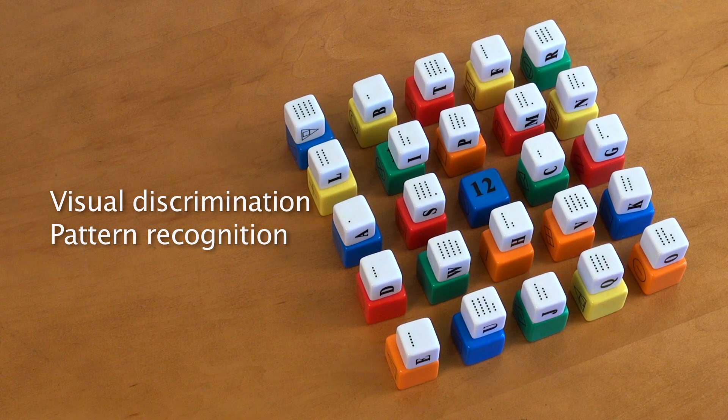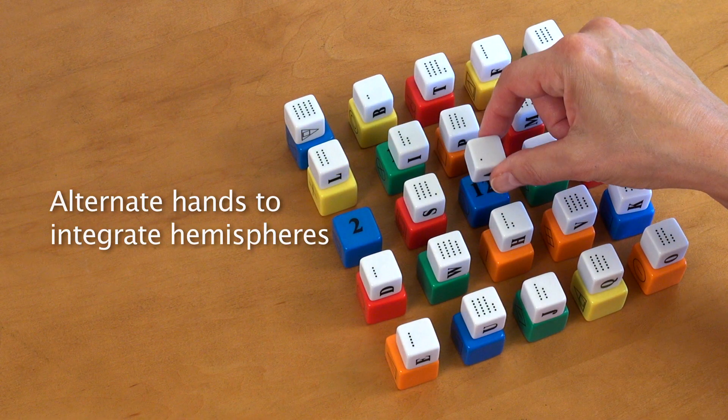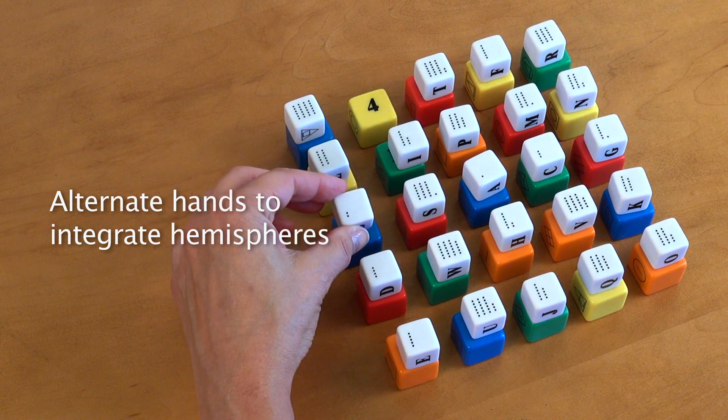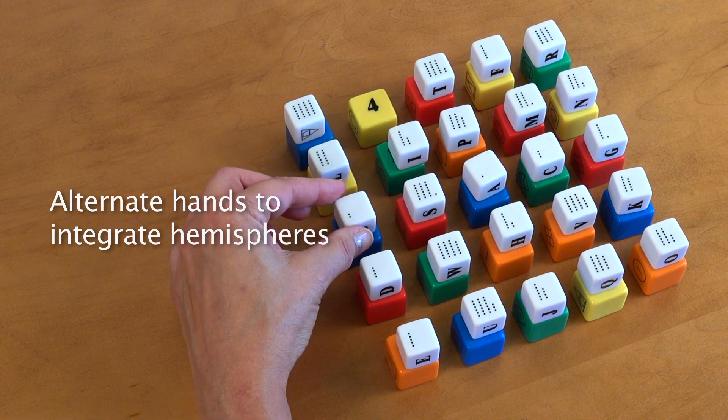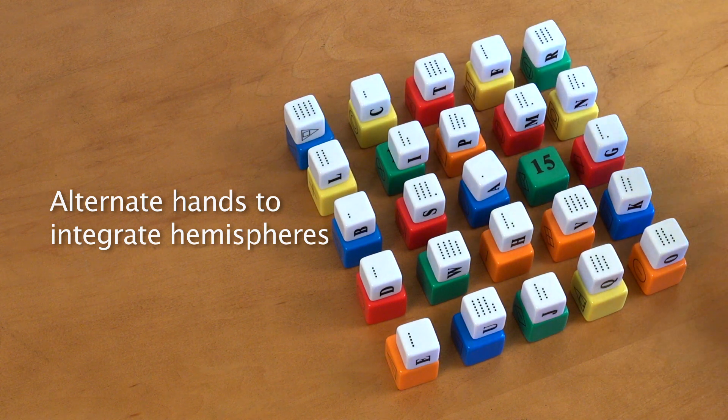This is more advanced than the regular number games, but you can add brain loads. As usual, you would move the dice in sequence, alternating your left and right hands in order to integrate both sides of your brain. So that's the second one, and then the third one. But I'm going to add a brain load challenge to myself.